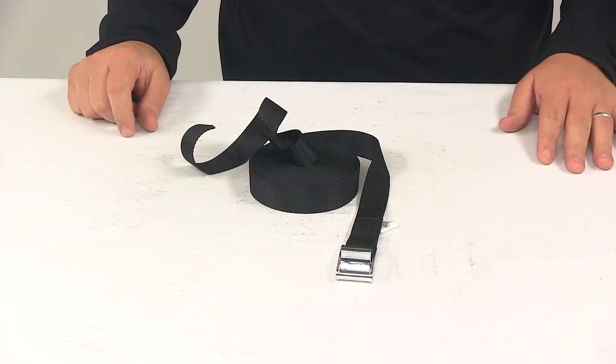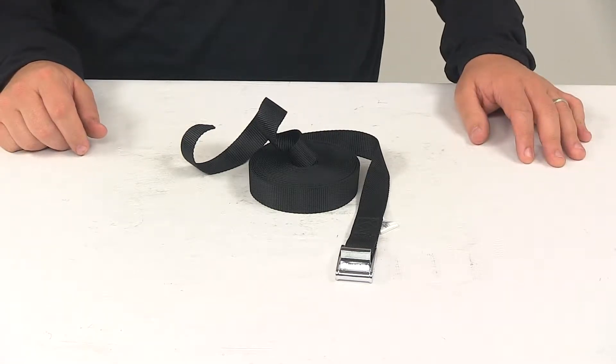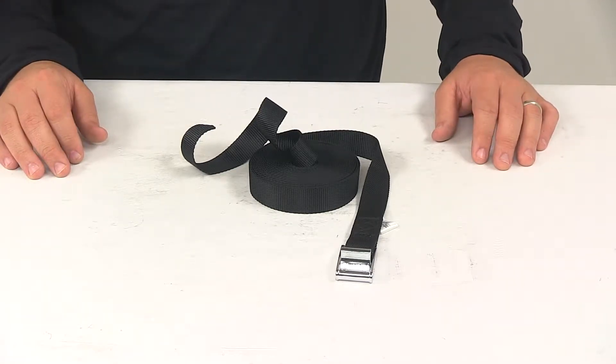Today we're going to be taking a look at the Inno Cam Buckle Cinch Strap. Cinching tie downs let you secure a variety of items to your cargo carrier or roof rack.